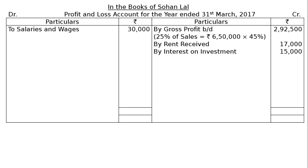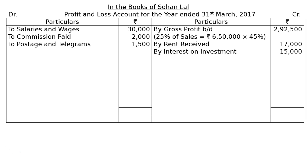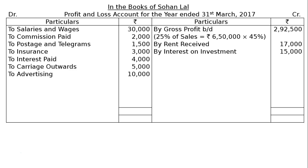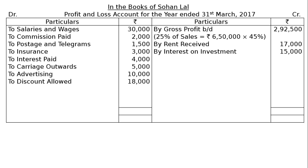On the debit side: To Commission Paid (office expenses); To Postage and Telegram (office expenses) rupees 1,500; To Insurance (office expenses) rupees 3,000; To Interest Paid (finance expenses) rupees 4,000; To Carriage Outward (selling expenses) rupees 5,000; To Advertisement (selling expenses) rupees 10,000; To Discount Allowed (finance expenses) rupees 18,000.